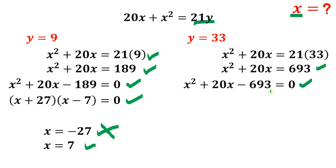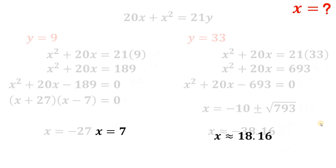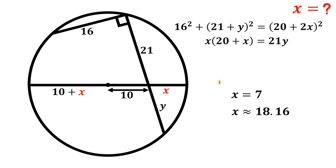For the second case, y = 33: x² + 20x = 693. This is not factorable, so using the quadratic formula we get x = −10 ± √793. Approximately, x ≈ −38.16 (not accepted, negative) or x ≈ 18.16. So x ≈ 18.16 is accepted for this case.